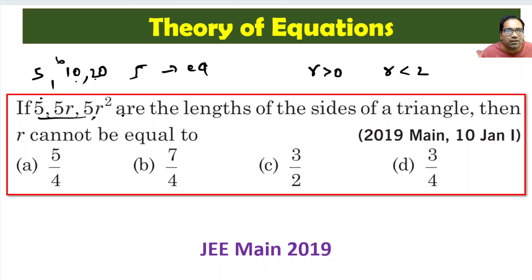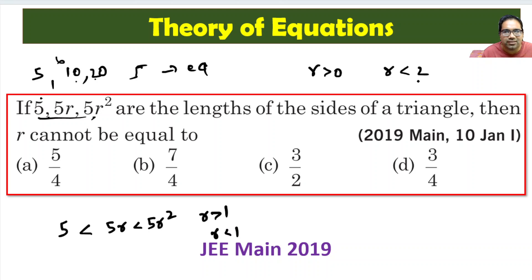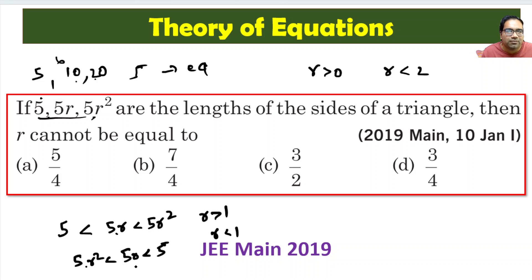If r is greater than 1, then 5 < 5r < 5r². If r is less than 1, then 5r² < 5r < 5. So in both cases, either 5 is the smallest or 5r² is the smallest. For a valid triangle, the sum of the two smaller sides must be greater than the largest side.